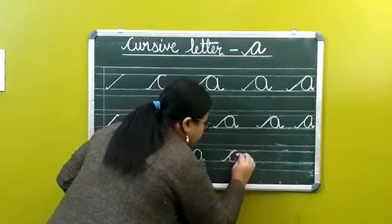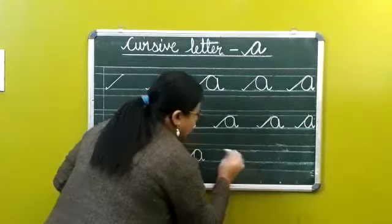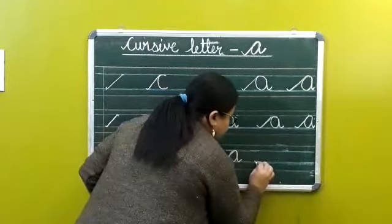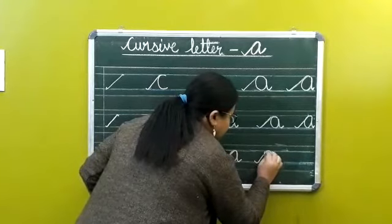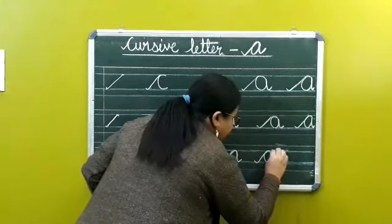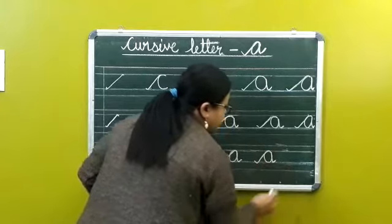Move your hand very slowly. Tail, slanting line, make C, go up joining the line, come down and a tail.